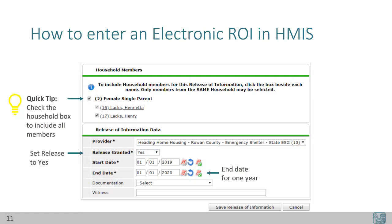We've checked the right boxes for Henrietta and Henry. A quick tip: if you check the box next to the household type, all of the household members will be included. Next, set the Release Granted to Yes in order to activate sharing settings. The end date is set for one year after the start date. In our example, we have backdated to January 1, 2019, so it is acceptable to use either 12-31-2019 or 1-1-2020 as the end date — both are considered one year.